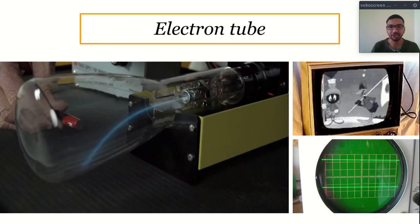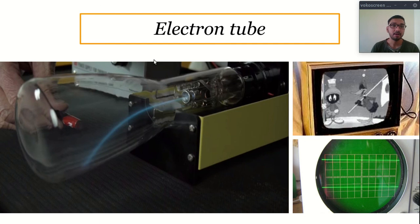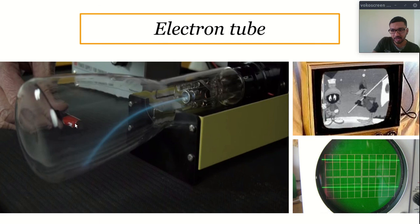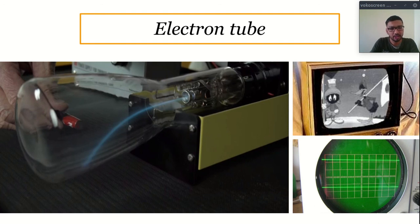Now let's see some applications. A very big application of such concepts is in the electron tube. You may find this electron tube inside your television screen or in your oscilloscope in your physics laboratory. In this type of instrument, we have an electron tube. Here is a picture of one — this is the ray of electrons, and here someone is applying a magnetic field externally. You can clearly observe the bending phenomenon. That's why it is very important to study the trajectory of a charged particle in electric and magnetic fields.